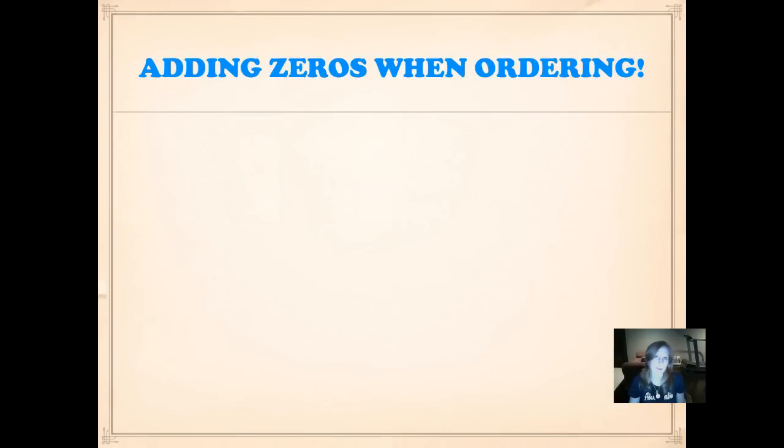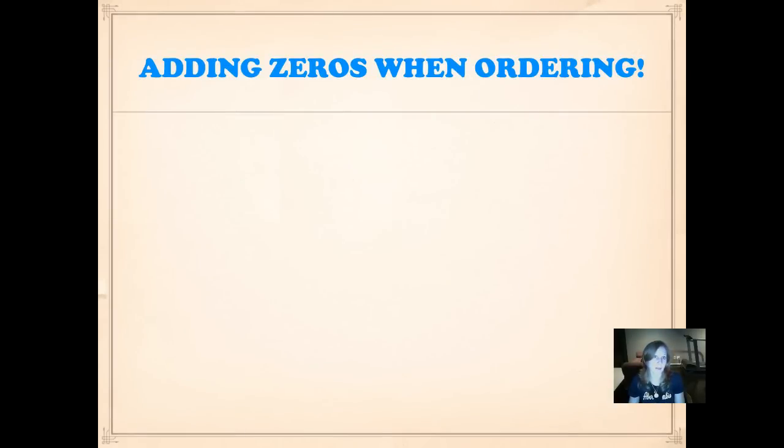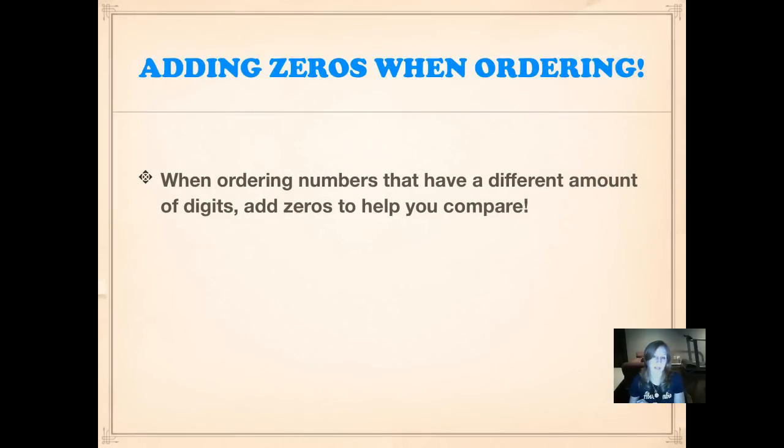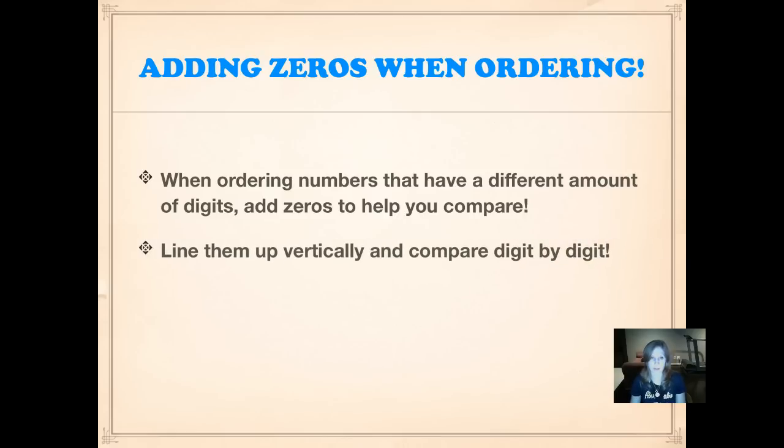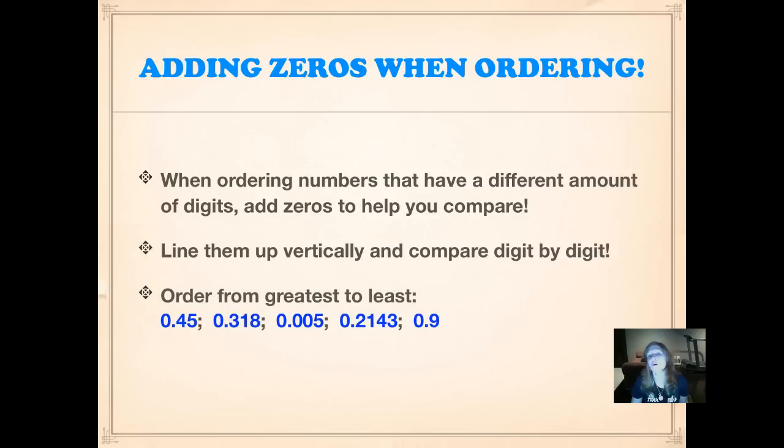We can add zeros when we're ordering too. Take a look. If there's a different amount of digits, add zeros to help you compare or cross zeros off. Line them up vertically and compare them digit by digit. Let's practice.